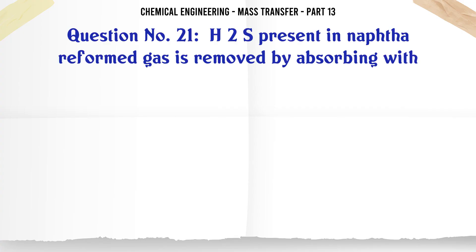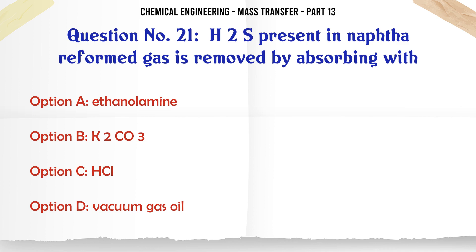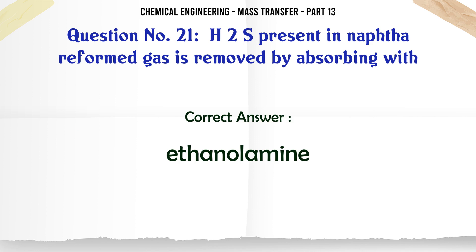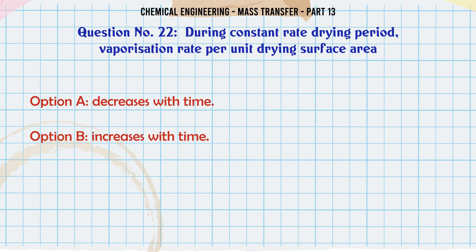H2S present in naphtha reformed gas is removed by absorbing with: A. Ethanolamine. B. K2CO3. C. HCl. D. Vacuum gas oil. The correct answer is: Ethanolamine.